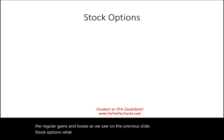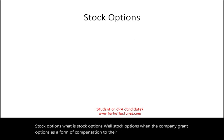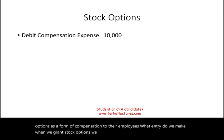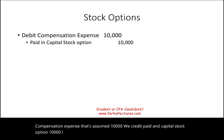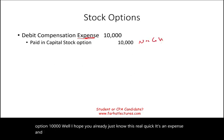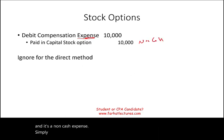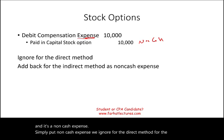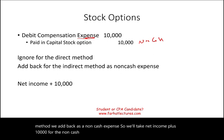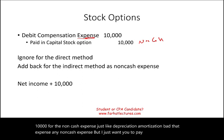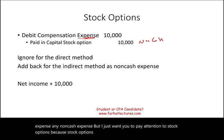Stock options: when a company grants options as a form of compensation to employees, the entry is debit Compensation Expense $10,000 and credit Paid-In Capital — Stock Options $10,000. It's a non-cash expense, so for the direct method we ignore it; for the indirect method, we add it back just like depreciation, amortization, or bad debt expense. Note that stock options could be buried within compensation or salaries expense, so you may need to separate them out.